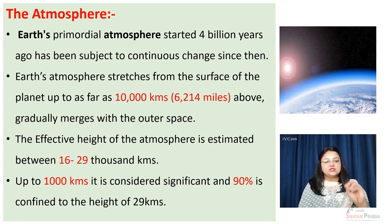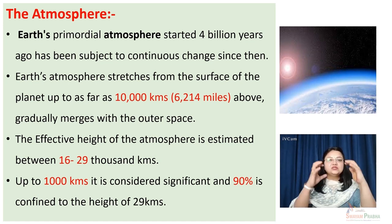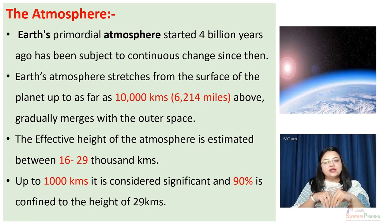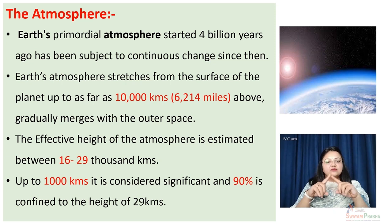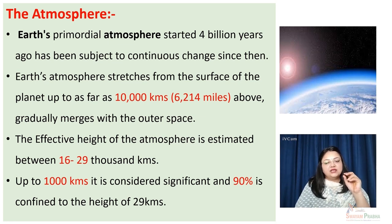The earth's atmosphere stretches from the surface of the planet to as far as 10,000 kilometers, and is retained in place by earth's gravitational pull. This atmosphere gradually merges with outer space. However, the effective height of the atmosphere relevant to the major conditions on the surface of earth remains between 16 to 29 kilometers, and even within that range, 90% of the atmosphere is confined to just 29 kilometers in height.